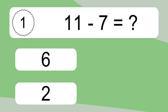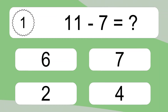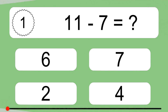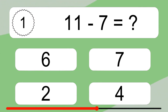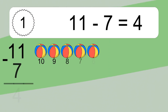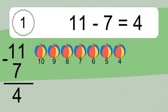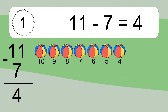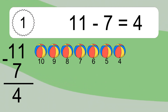11 minus 7 equals what? 11 minus 7 equals 4. Let's count it: 10, 9, 8, 7, 6, 5, 4.